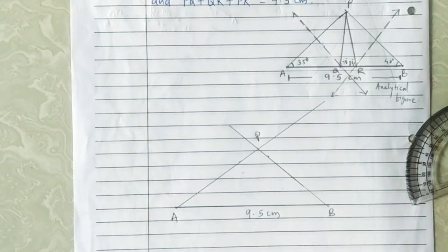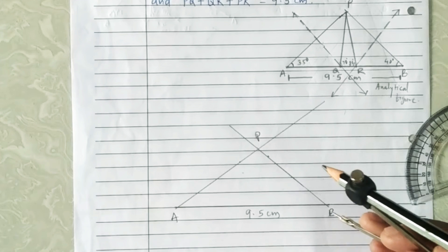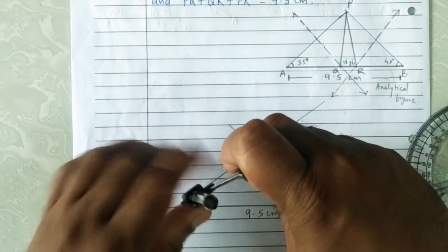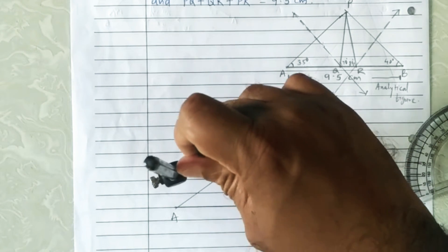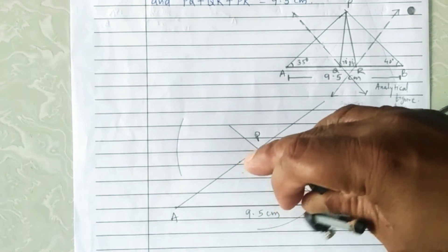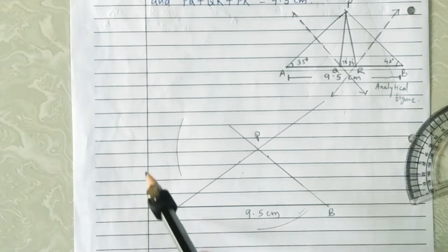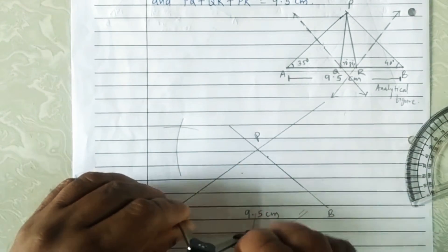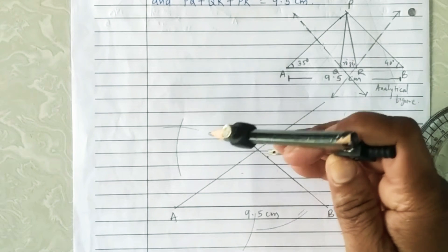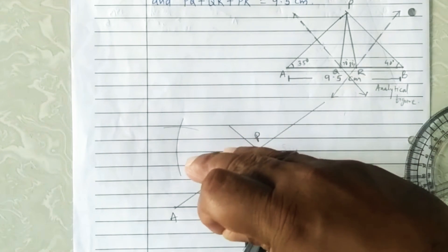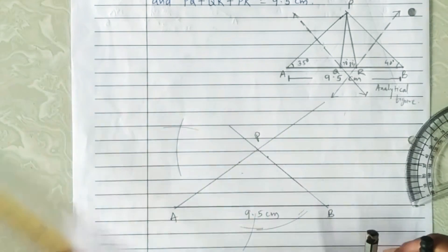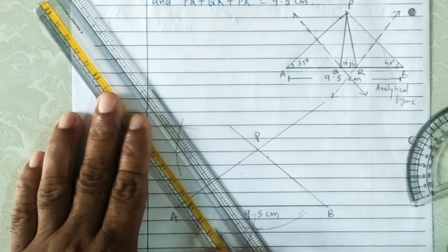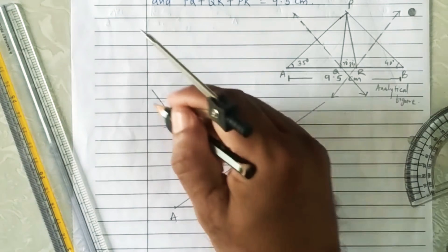Now draw the perpendicular bisector of segments PA and PB. Keep the compass pointer at P, take a distance more than half of PA, and draw one arc above PA and one below PA. Then place the pointer at A and cut the arcs drawn above and below segment PA. See that both arcs should intersect each other. Now draw the perpendicular bisector of segment PA.